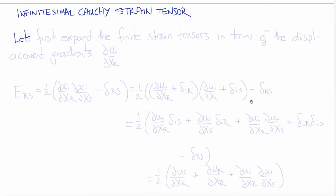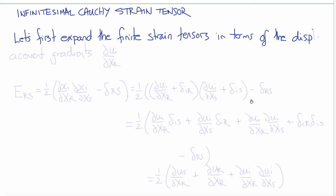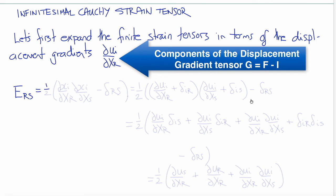Now let's derive the infinitesimal Cauchy strain tensor, which is important to understand is actually an approximation — it's a linearization of our finite strain tensors, which are quadratic. As such, it is only accurate under certain conditions. To show what those conditions are, let's expand the finite strain tensors in terms of the displacement gradients ∂ui/∂Xr instead of the deformation gradients ∂xi/∂Xr.